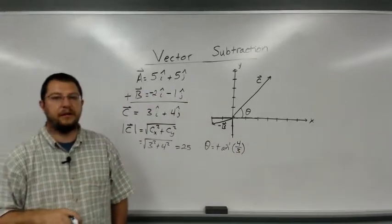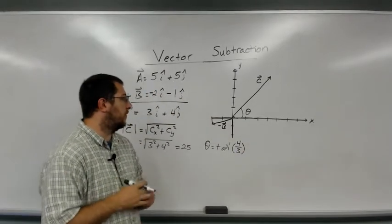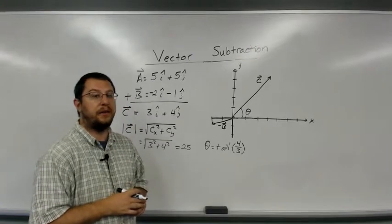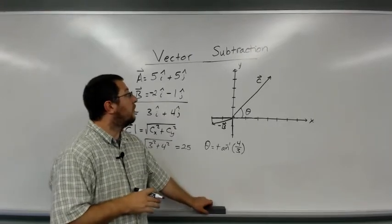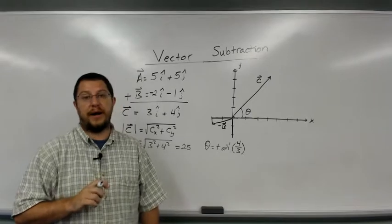Somewhere around 50 degrees, in between 50 and 60. But anyway, if you put that in your calculator, you can easily find that. So that is how you can subtract two vectors.